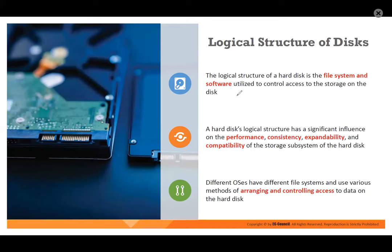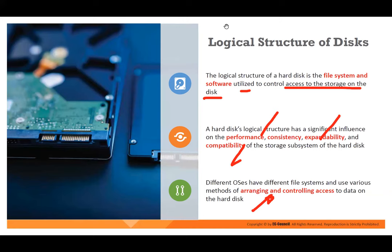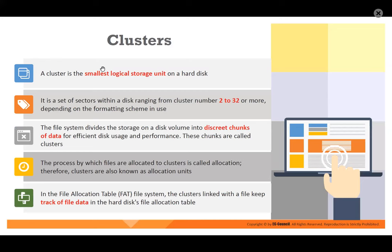The logical structure of the hard disk is the file system and software that control access to the storage on the disk. This logical structure has significant influence on performance, expandability, and compatibility. Different OS use different file systems using various methods for arranging and controlling access to data. You remember we used to do partitioning — C drive, D drive. A cluster is the smallest logical storage unit. The file system divides storage on a disk volume into discrete chunks of data. The process by which files are allocated to clusters is called allocation; therefore clusters are also known as allocation units.